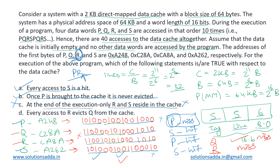Every access to R evicts Q from the cache, which is also true. So the correct options are A, B, and D.